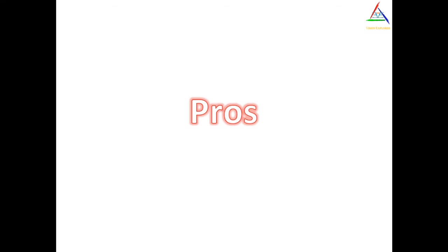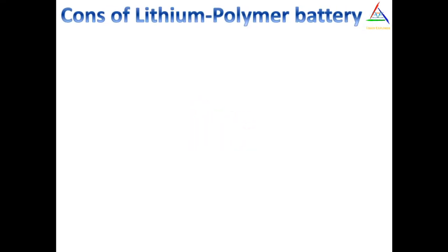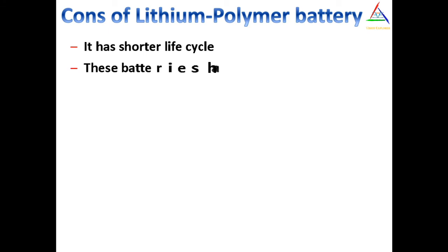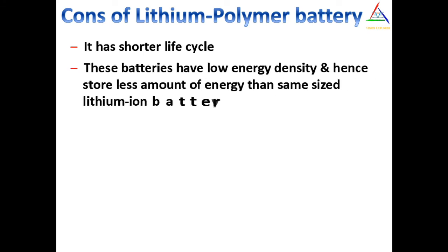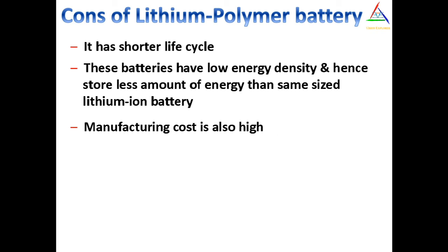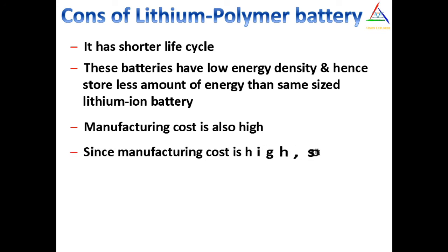Now let's talk about the cons of lithium polymer battery. The first is it has a shorter life cycle. The next is these batteries have low energy density and hence store less energy than the same size lithium ion battery. The next is the manufacturing cost of lithium polymer battery is also high, and since their manufacturing cost is high, their price is also high.